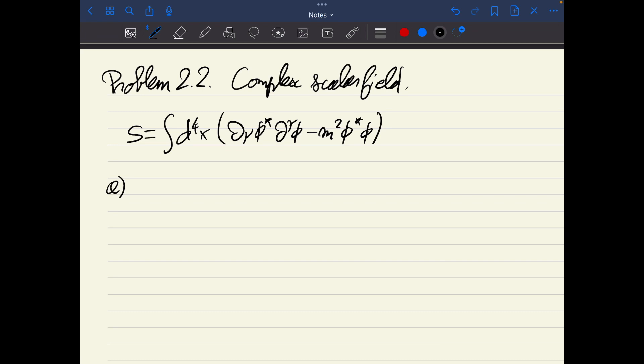The first thing we want to do is compute the conjugate momenta associated to phi and phi star. So the one for phi, I call pi, and it's simply the derivative of the Lagrangian density with respect to phi dot. Phi dot is the time derivative of phi. The Lagrangian density is the term in the action here. We see that it is directly phi dot star. The second I call phi tilde, and it's the derivative with respect to phi dot star this time. From the Lagrangian, it's clear that it's just phi dot, which turns out to be pi star.